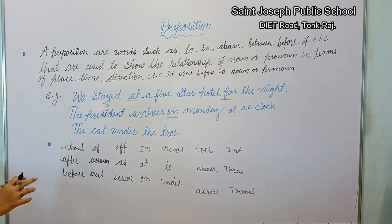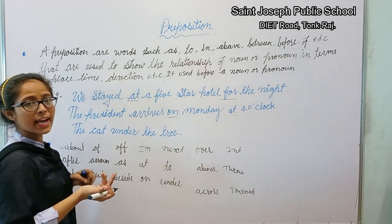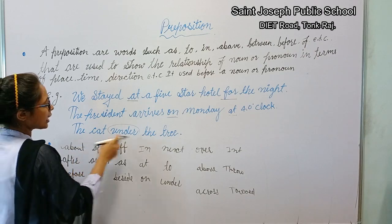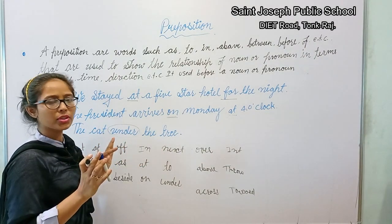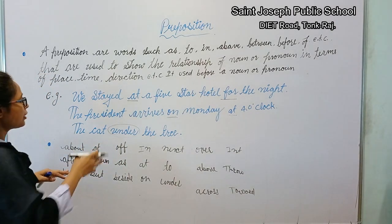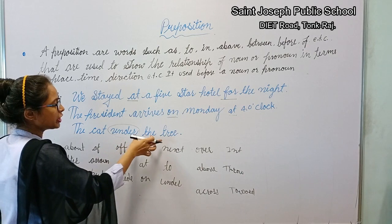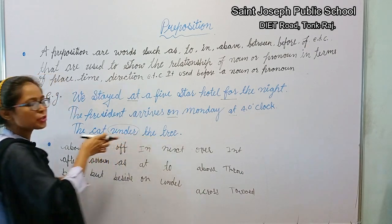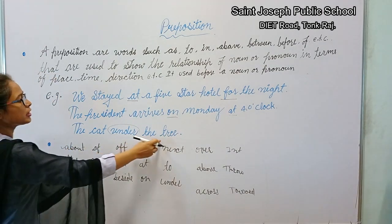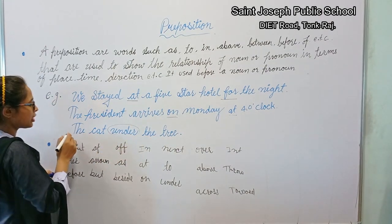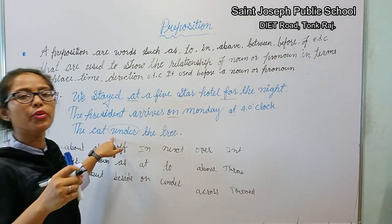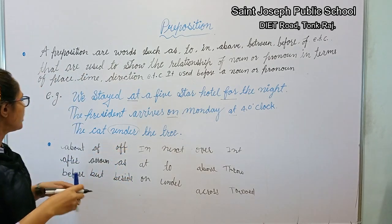Another example: 'The cat is under the tree.' Without 'under,' we have two separate ideas — 'the cat' and 'the tree.' When we write 'under,' it gives meaning and joins the two parts into one complete sentence. 'Under' is the preposition word here.